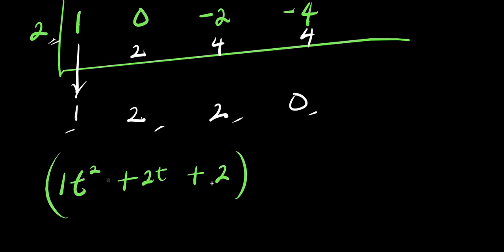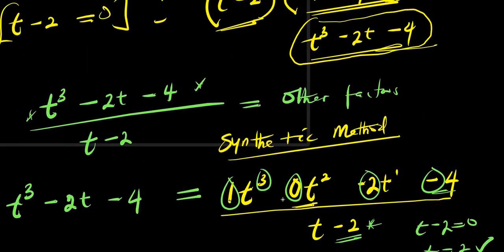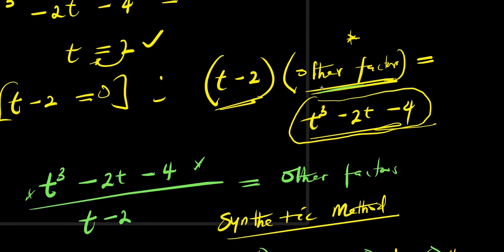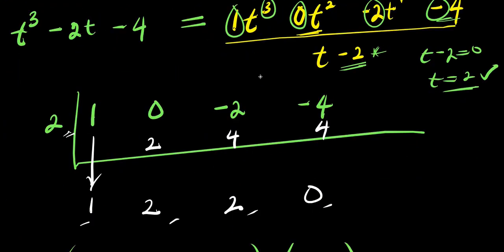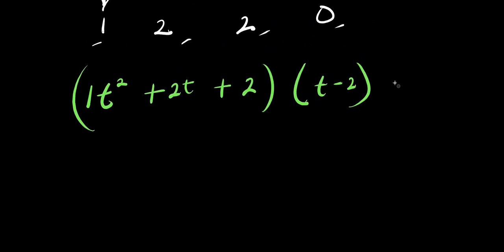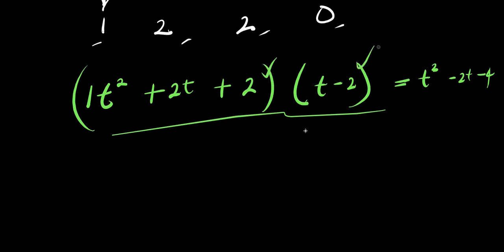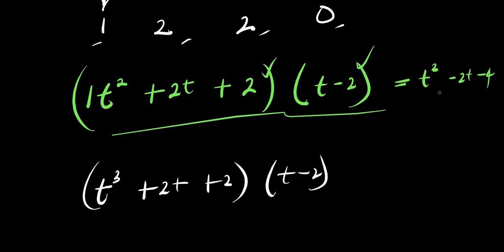So this becomes the other factor we were looking for. If you multiply this by the t minus 2 that we had earlier, you get the original equation, which is t cubed minus 2t minus 4. We have now factorized it as (t squared plus 2t plus 2) times (t minus 2) equals 0. So let's equate each factor to 0.